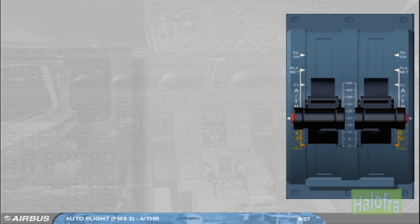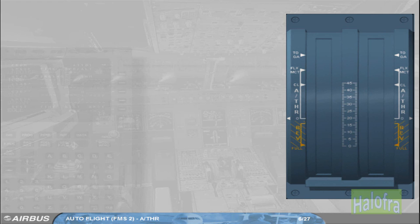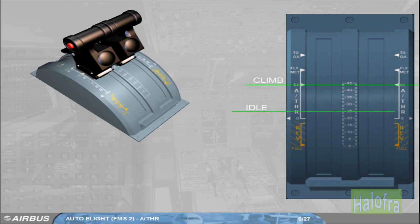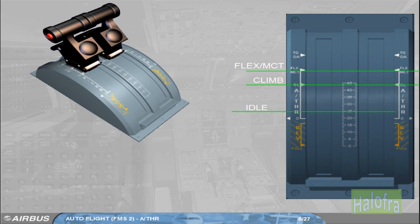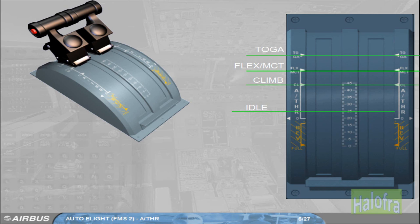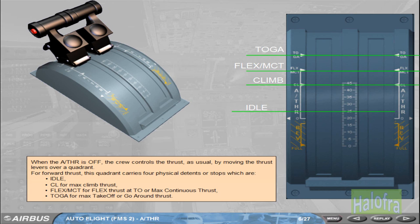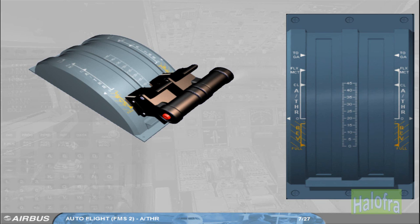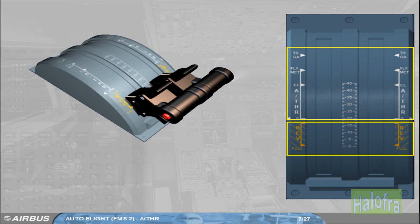When the Autothrust is off, the crew controls the thrust as usual by moving the thrust levers over a quadrant. For forward thrust, this quadrant carries four physical detents or stops, which are idle. The Autothrust can only work when the thrust levers are set forward of the idle detent and up to the climb detent, or MCT detent in case of engine failure. If the thrust levers are set by the pilot in the reverse position, the Autothrust cannot operate. Note: the alpha-floor function is an exception which will be covered later on.